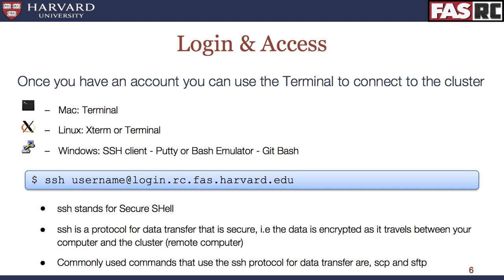When I talk about using the command line interface, where can you find it? The Mac operating system comes with a basic utility called Terminal, which will allow you to use the SSH command to connect to the cluster. Similarly, Linux has Xterm or Terminal. You can search for one of these applications on your computer depending on your operating system. Things are a little different for Windows — you'll have to download either an SSH client or a bash emulator. Depending on which you choose, the logging in method will be slightly different. If you use a bash emulator, you will type in the SSH command as mentioned. If you choose an SSH client, please look at our documentation for instructions on how to log in.